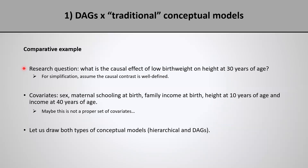For this example, we're going to consider the following research question: what is the causal effect of low birth weight on height at 30 years of age? For simplicity, we're going to assume that the causal contrast is well-defined, so we can focus only on the comparison between DAGs and traditional conceptual models. The covariates we're going to consider when drawing our models are those listed here. This might not be a proper set of covariates, but the point is just to compare the two types of models.